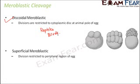The second type is superficial meroblastic cleavage, where division is restricted only to the peripheral region of the egg — just the surface of the egg is where cleavage can take place. The word 'superficial' means something on the surface with nothing deep inside; similarly here, only the outer portion is the region where cleavage occurs, while from inside it is hollow. This type of cleavage is seen in eggs of insects.